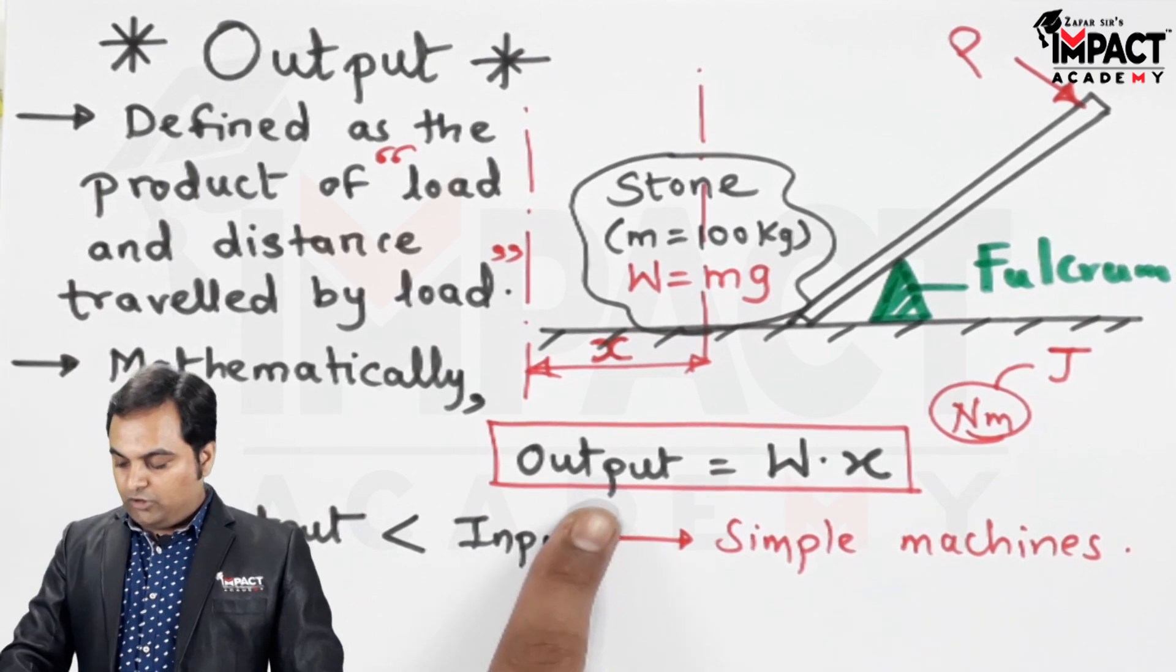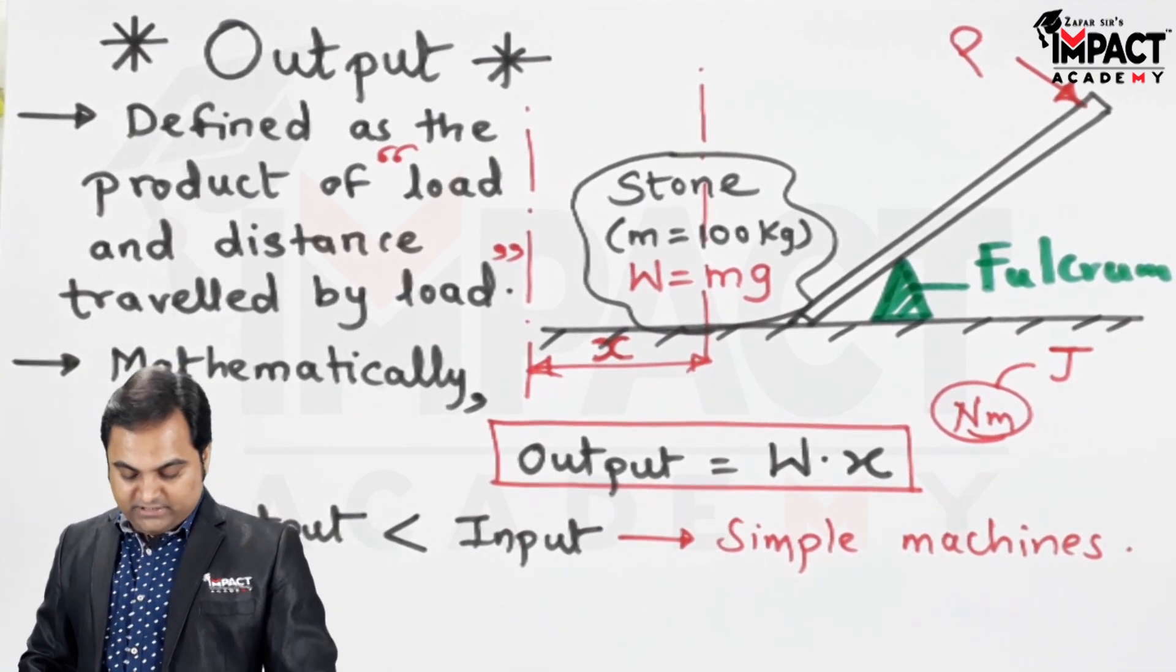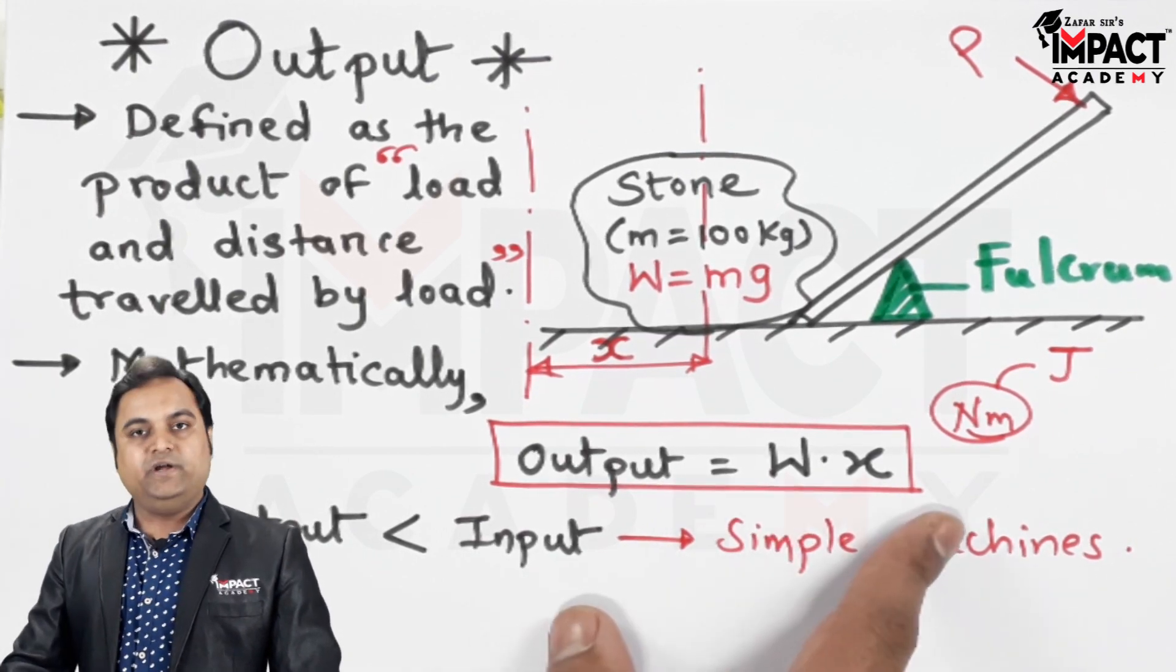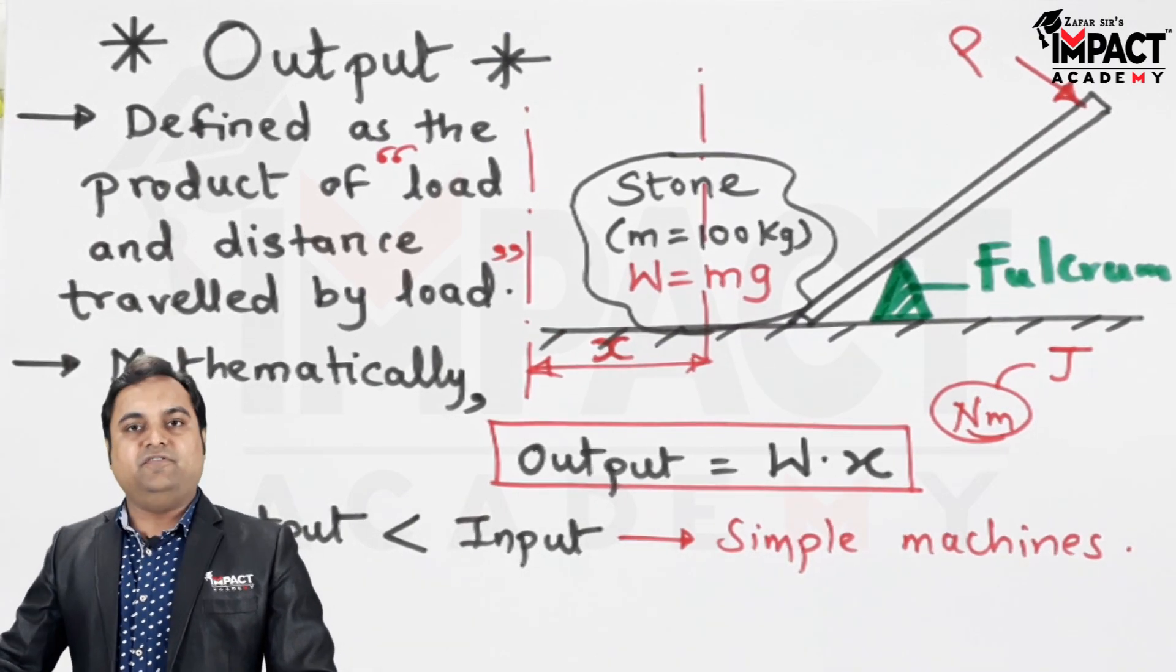And as explained, in case of simple machine, the output would always be less than input. And input is given by P into Y, like output is W into X. Input is P into Y, that is effort and the distance traveled by the effort.